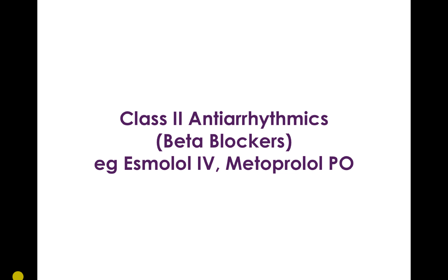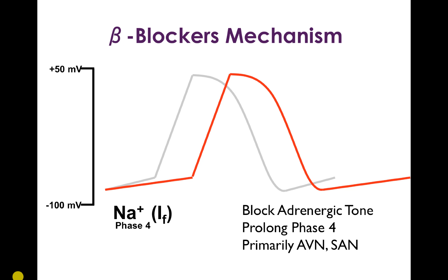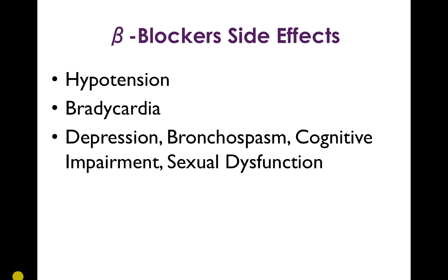Class 2 antiarrhythmics are the beta blockers. The two to keep in mind are esmolol, an IV formulation, and metoprolol, an oral formulation, though the electrophysiological properties are similar across all beta blockers. Beta blockers treat rhythm disturbances primarily through their effect on the AV node and SA node: by blocking adrenergic tone they prolong phase 4 depolarization, slowing AV nodal and SA nodal activity. Important side effects include hypotension, bradycardia, depression, bronchospasm, cognitive impairment, and sexual dysfunction.